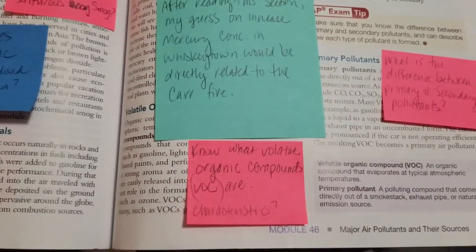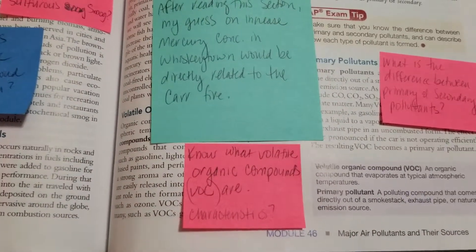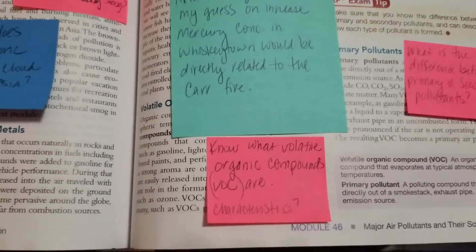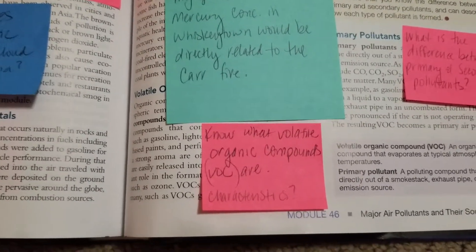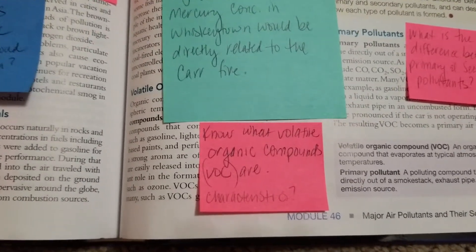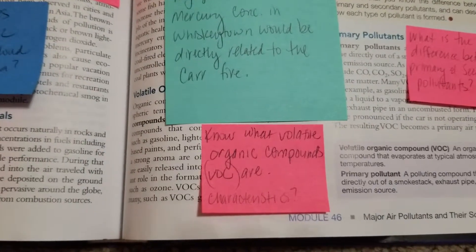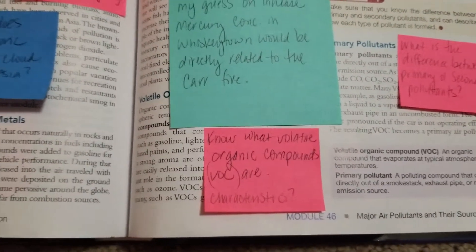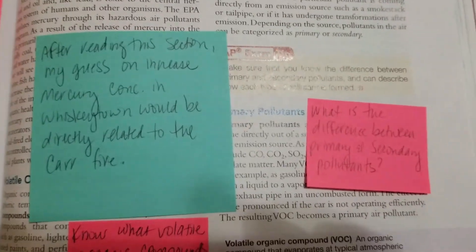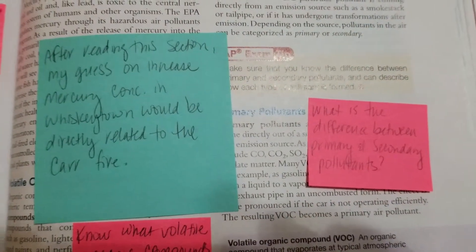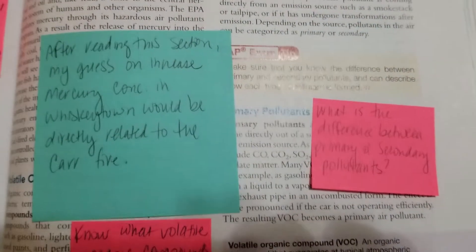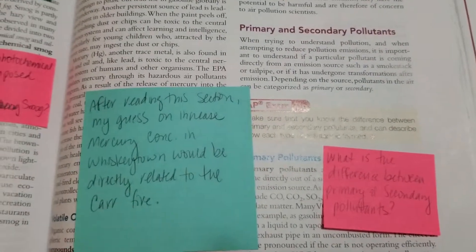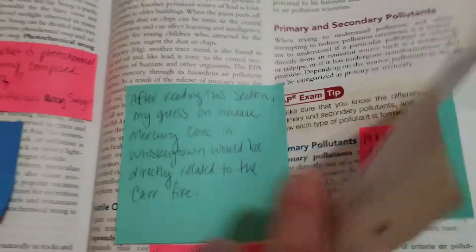Know what volatile organic compounds are — VOCs. What is that and what are their characteristics? Know how things are classified as a volatile organic compound and what the requirements are for that. And then what is the difference between primary and secondary pollutants? What is primary, what is secondary, and how do they form?